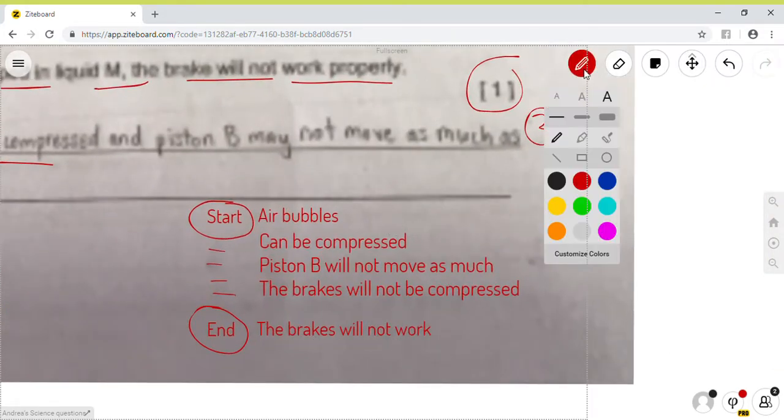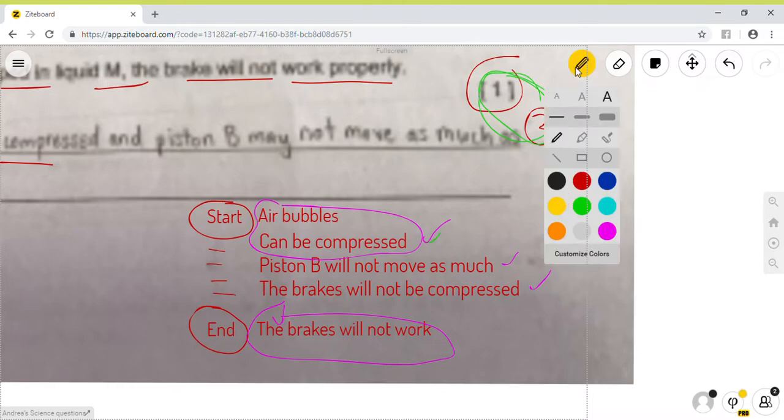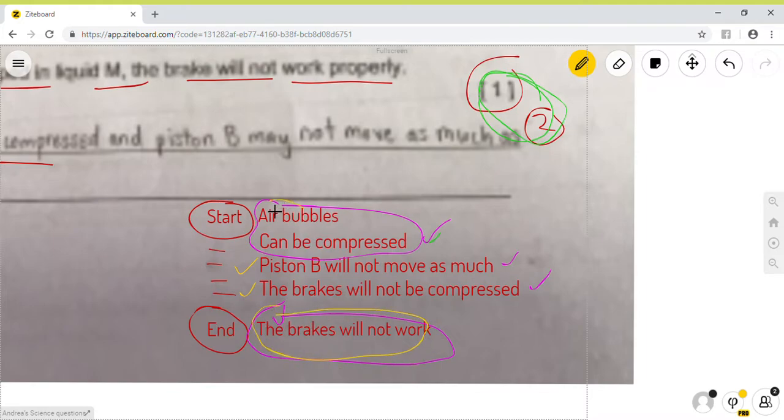Okay? So, what I'm trying to show is that most students, when they don't score the maximum mark, it's because they don't have the full connection. You know what I mean? They don't have the full link. They don't have the link until here. Some students, they will just say that, oh, because the air bubbles can be compressed and therefore the brakes will not work. You know what I mean? That means they skip this one, they skip this one, then they straight away jump to this one. So, when you do that, you don't get the maximum marks, whether it's one mark or two mark.